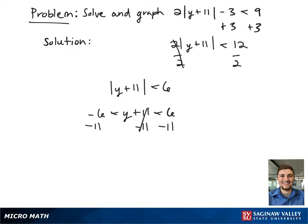To get rid of the single term, we're going to subtract 11 from all sides. This gives negative 17 is less than y is less than negative 5.